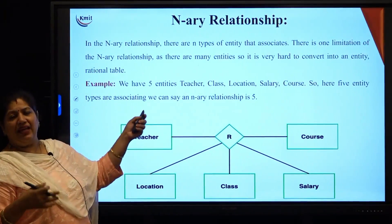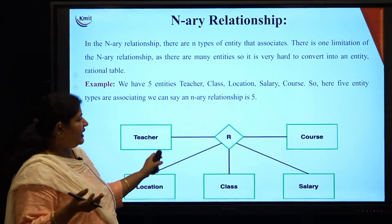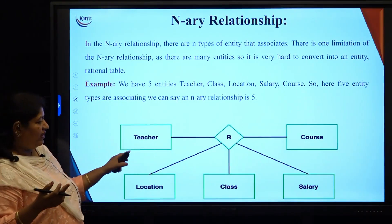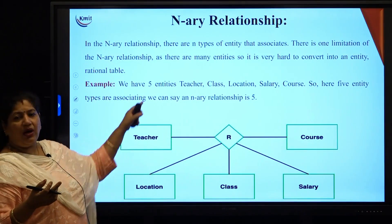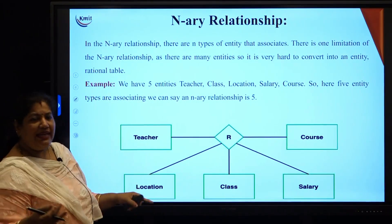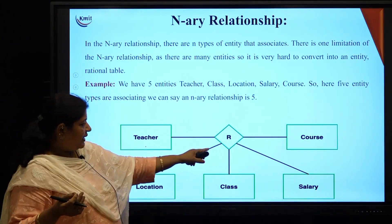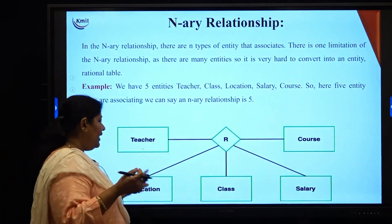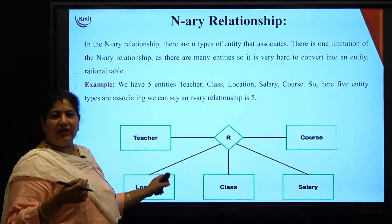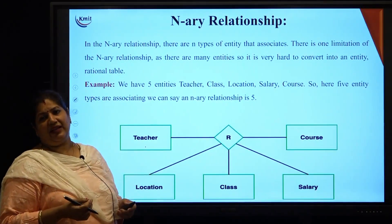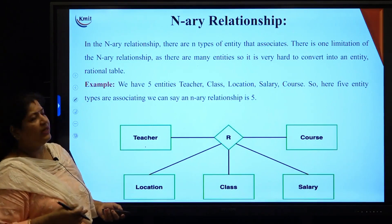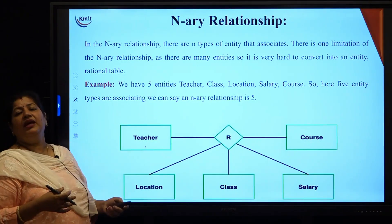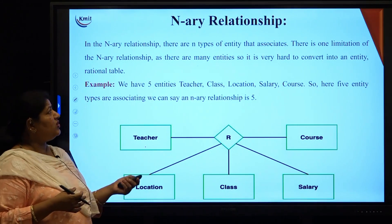Further, it can be n-ary — 4, 5, or whatever number of entity types are associated. For example, in a whole learning system: a teacher teaches for a particular class, for a particular course, in a particular location, and earns a salary. When multiple entity types are associated in a relationship, it is called an n-ary relationship.